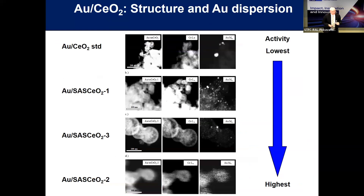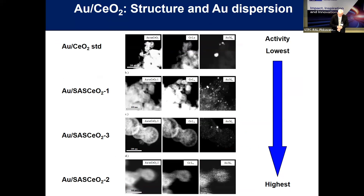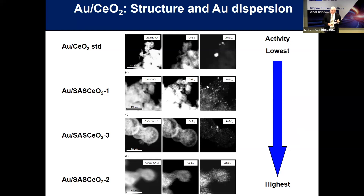To understand this activity, we look at gold dispersion. Ranking catalysts from least to most active, the EDX gold mapping on the standard calcined cerium acetate catalyst shows fairly large gold particles. Moving to the supercritical catalysts, we see increasing gold dispersion and smaller nanoparticles. The most dispersed gold nanoparticles give the most active catalyst. We believe the highly defective nature of these supercritical materials gives rise to very high metal dispersion.